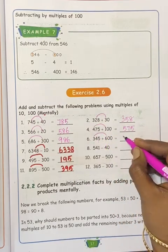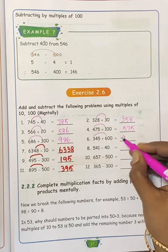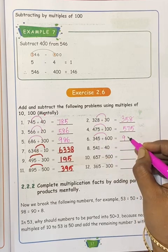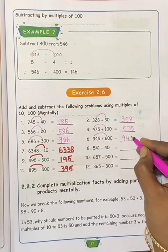Next, 345 plus 600. 100s. 3, 6, 3 plus 6, 9, 0 plus 4, 4, 0 plus 5, 5.